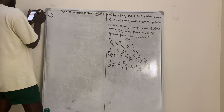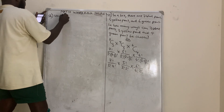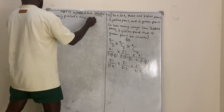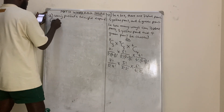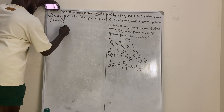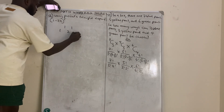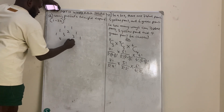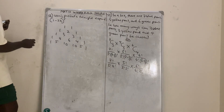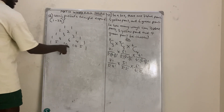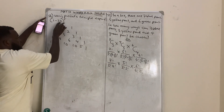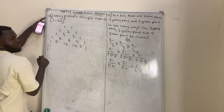Question number 56: Using Pascal's triangle, expand (1 minus 2x) raised to the power 5. According to Pascal's triangle, the row for power 5 is: 1, 5, 10, 10, 5, 1. So I will use the coefficients 1, 5, 10, 10, 5, 1. You can watch my video on binomial expansion to understand it perfectly.